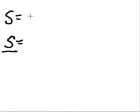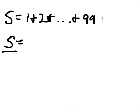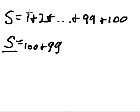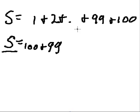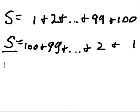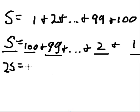Let's try it with a tougher number — like 100. S is equal to 1 plus 2 plus dot dot dot plus 99 plus 100. Now we reverse it: 100 plus 99 plus dot dot dot plus 2 plus 1. Adding the s's: 2s equals... they all add up to 101, 101, 101.